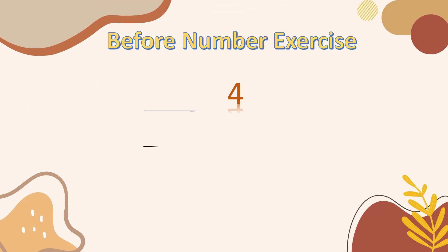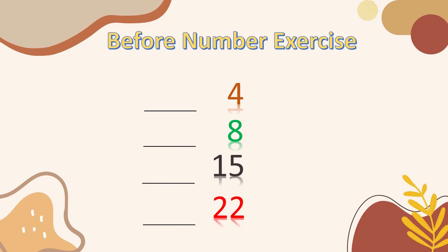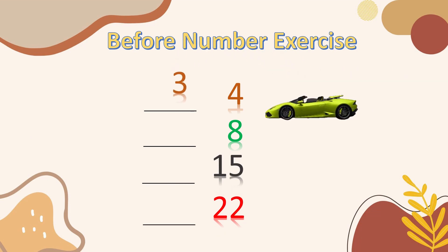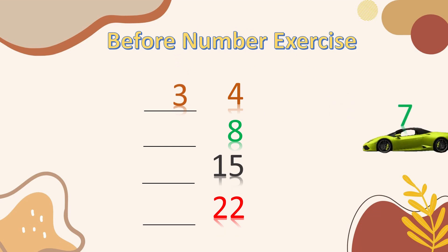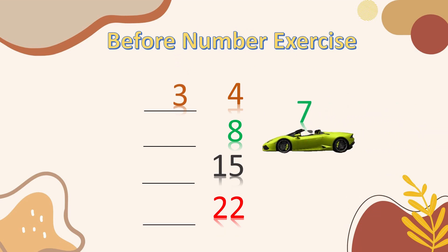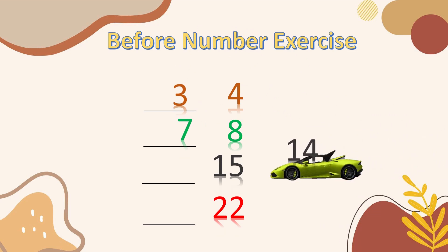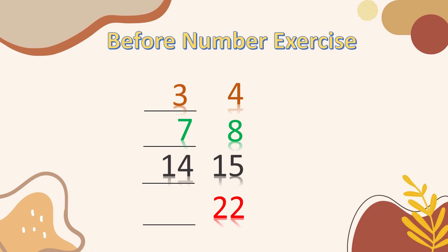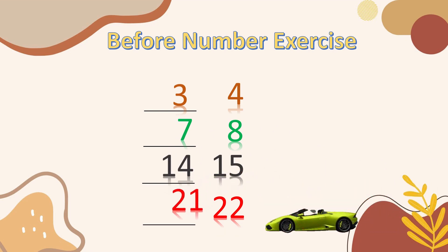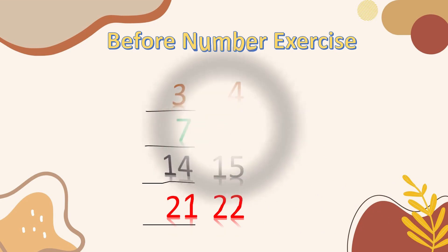Before number exercise: what comes before 4? What comes before 8? What comes before 15? What comes before 22? We have to move backward, so before 4 is 3, before 8 is 7, before 15 is 14, before 22 is 21. Hope you understand before numbers.